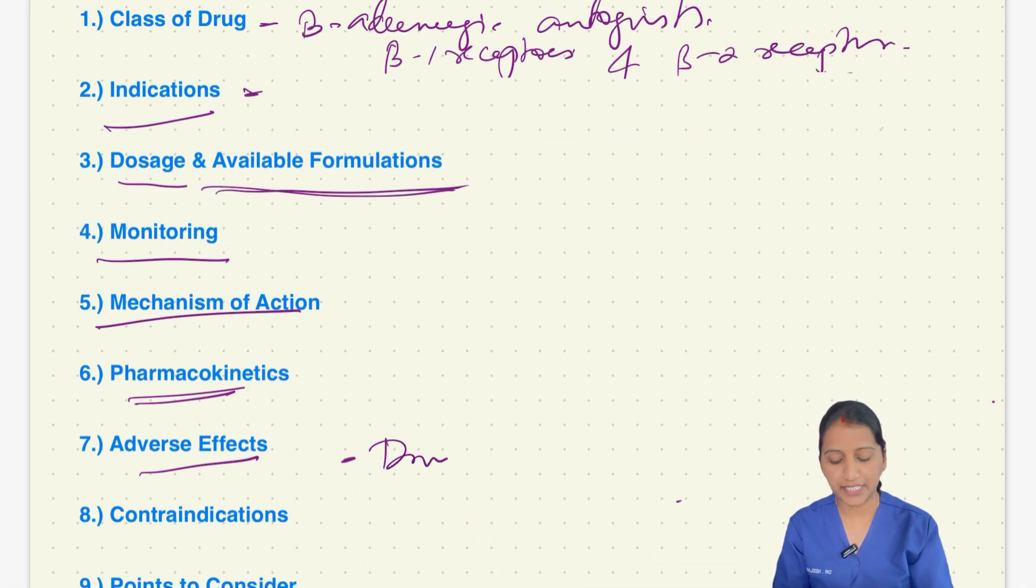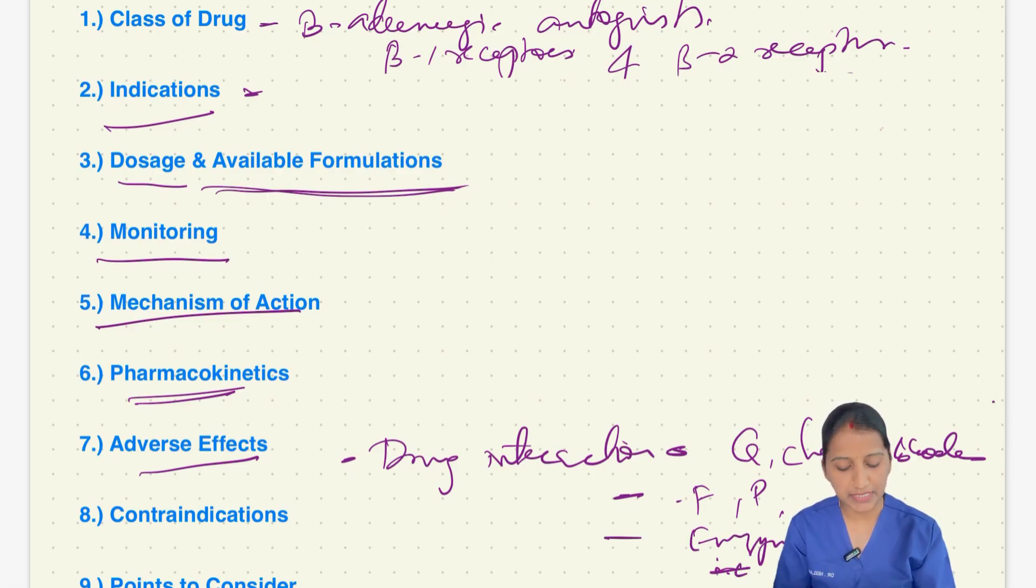Next, coming to drug interactions. Metaprolol must be prescribed with caution. If prescribed along with calcium channel blockers as it may have an additive effect, enzyme inhibitors like fluoxetine and paroxetine may elevate metaprolol levels and can increase adverse effects. Enzyme inducers like rifampicin may accelerate metaprolol metabolism. Hence this must be considered in mind.